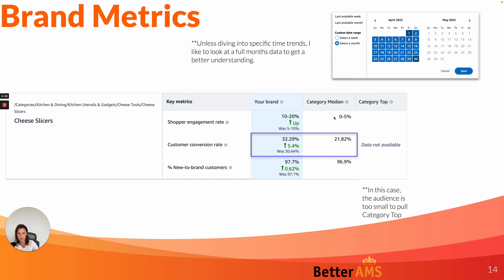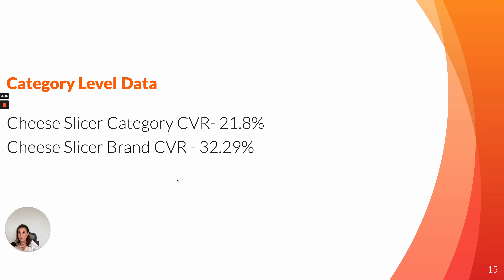If I were to pull this and see I'm converting 10 percent less than category average, then I probably don't want to drive more traffic because I'm just going to lose money if that traffic doesn't convert. With Amazon ads we don't control conversion rate — we're just driving traffic. So if your ads are not converting, it's typically a listing problem, potentially a bad targeting problem as well. But holistically we can see that for the cheese slicer category the average conversion rate is 21 percent, but for my brand it's 32.29 percent. That's a good signal of wanting to move forward — green light, great.